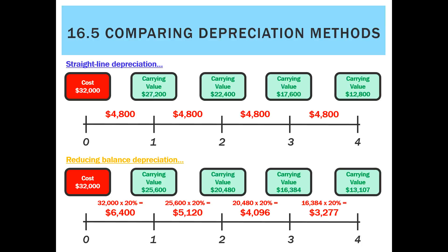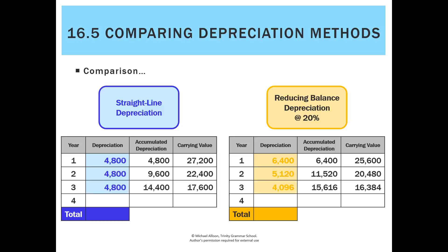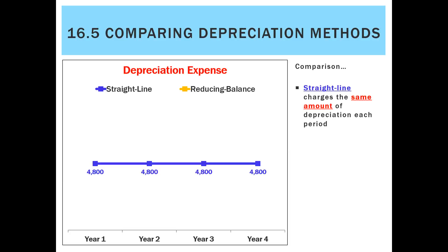At the end of year four, straight line finishes with a carrying value of $12,800 while reducing balance is $13,107. Looking at total depreciation charged: in year one, straight line was $4,800 versus $6,400 for reducing balance. By year three, straight line is actually more than reducing balance, and by year four it's significantly more. In total, straight line charged $19,200 and reducing balance $18,893 — very close overall.